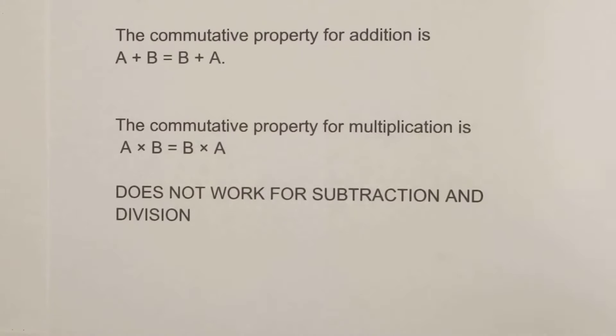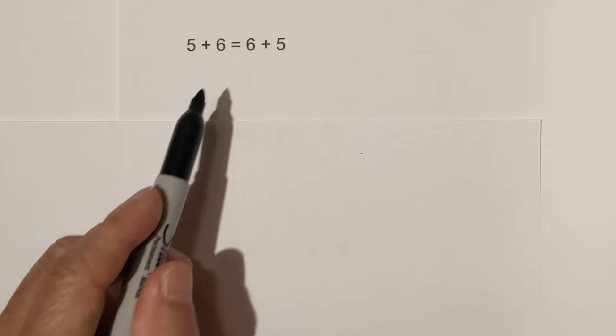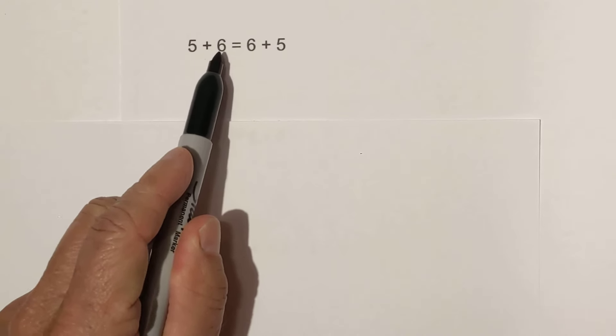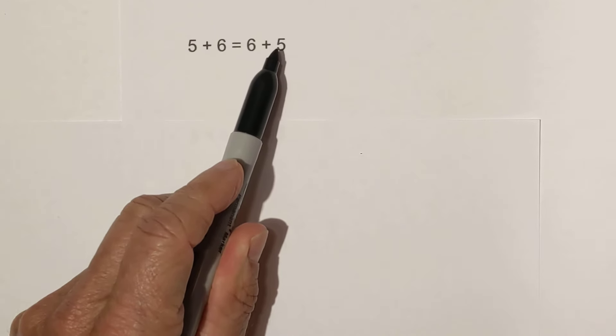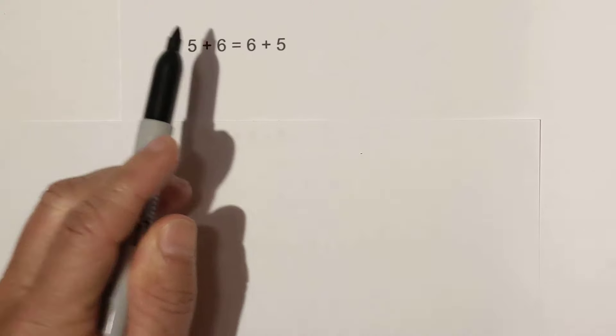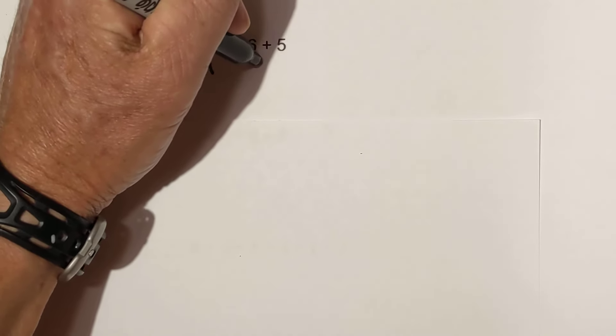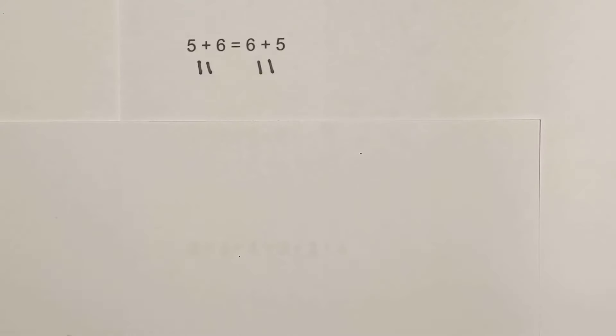Let's look at a couple examples. Okay, let's take this addition. We have five plus six, but now this six has commuted to the front. Five plus six is eleven and six plus five is also eleven.